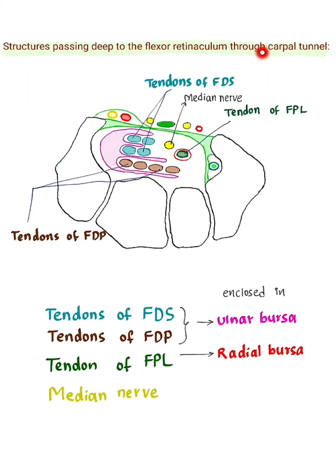Structures passing deep to the flexor retinaculum through the carpal tunnel: tendons of flexor digitorum superficialis, tendons of flexor digitorum profundus, tendons of flexor pollicis longus, and the median nerve.